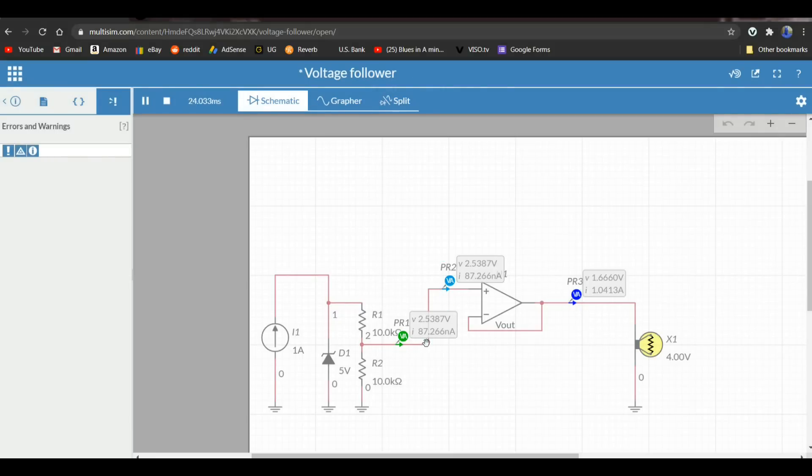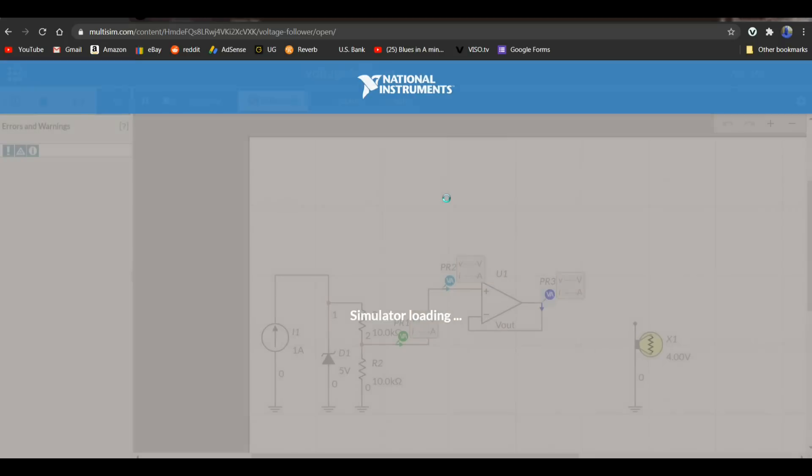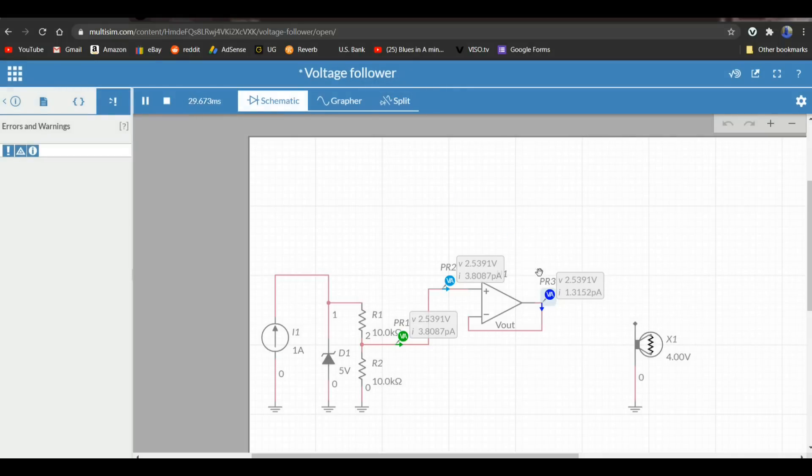You can see we have 87 nano amps going into the op-amp and 1.04 amps coming out. Now yeah you see the voltage here has dropped lower, well that's just because of the load of the light here. Let me get rid of that line and we'll put this here and we'll run the sim again.